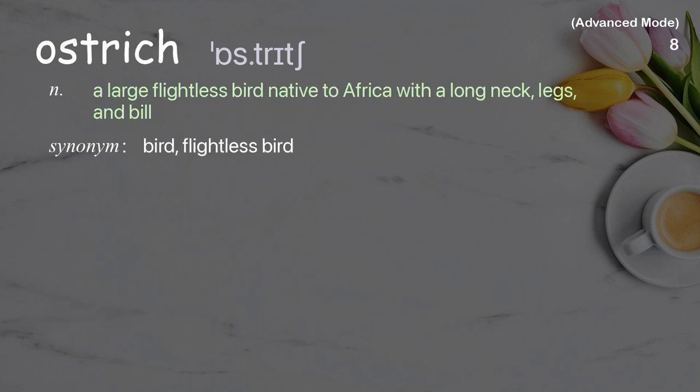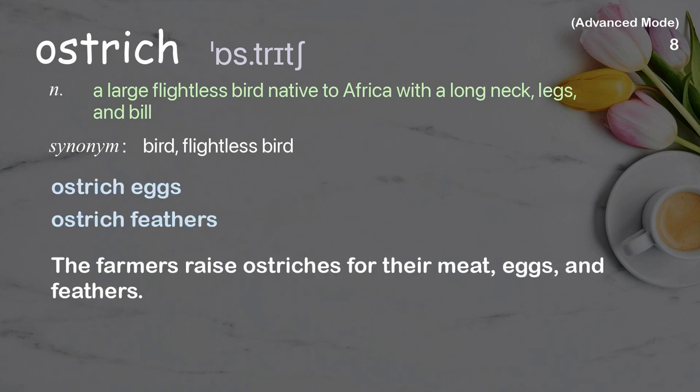Ostrich. A large flightless bird native to Africa with a long neck, legs, and bill. Examples: ostrich eggs, ostrich feathers. The farmers raise ostriches for their meat, eggs, and feathers.